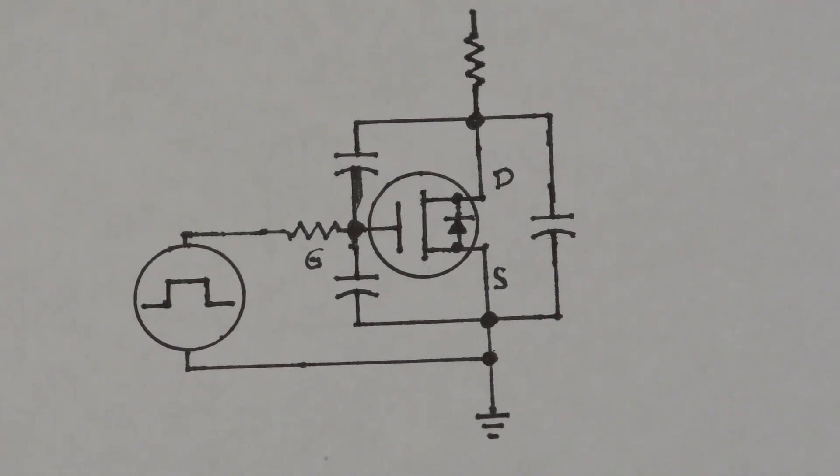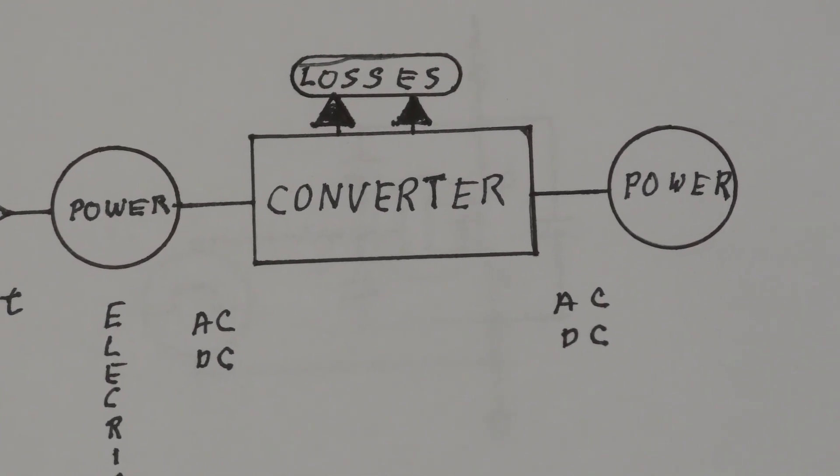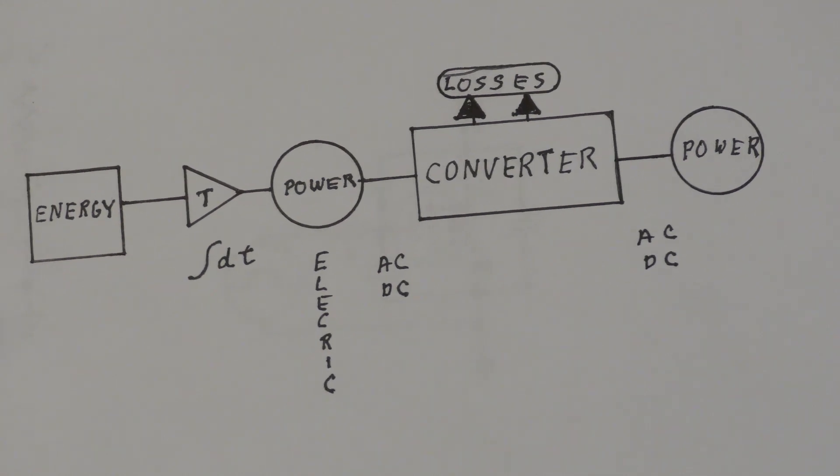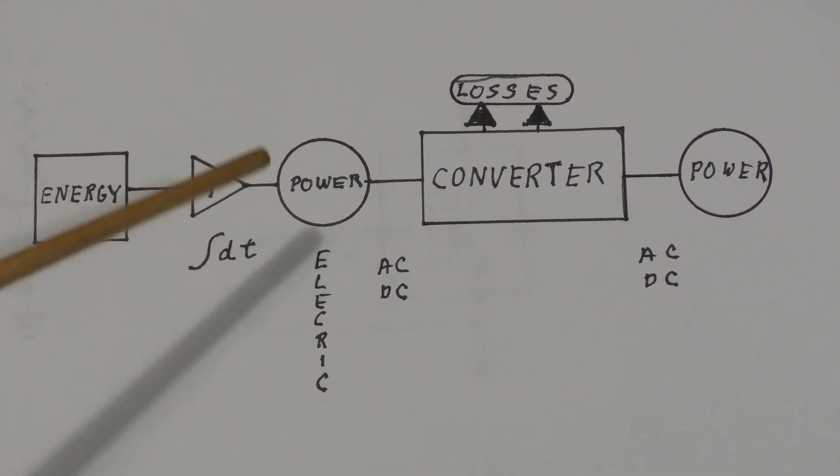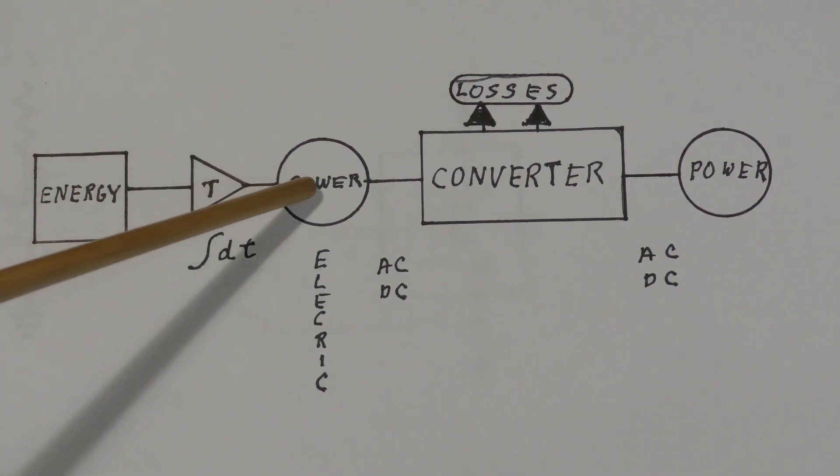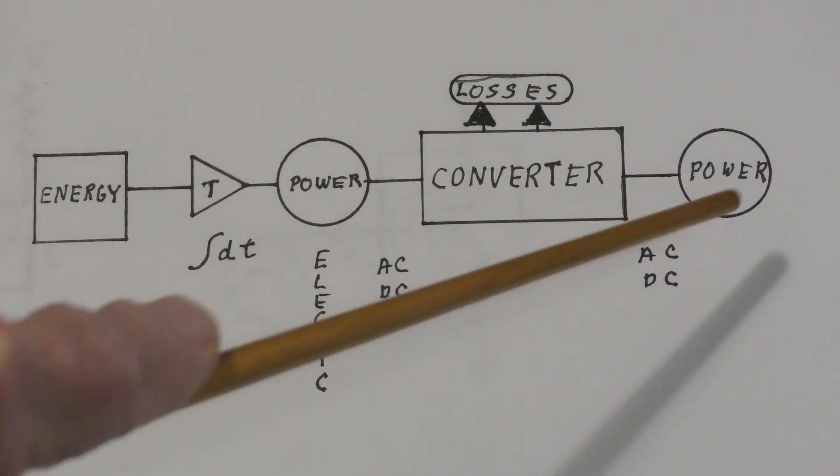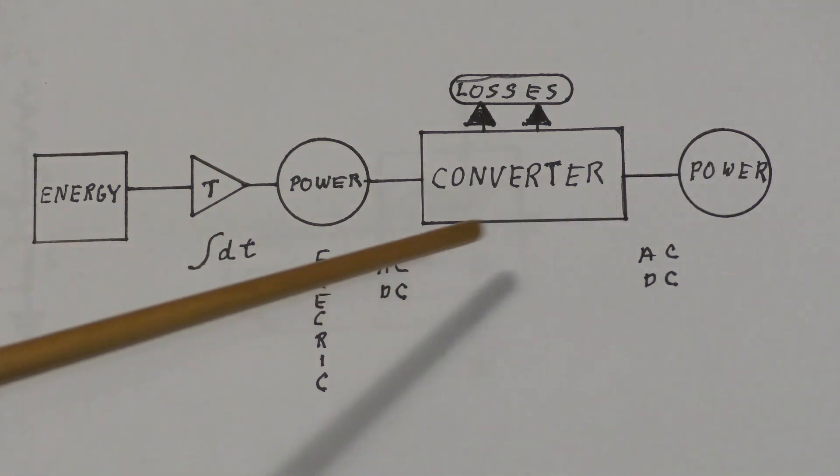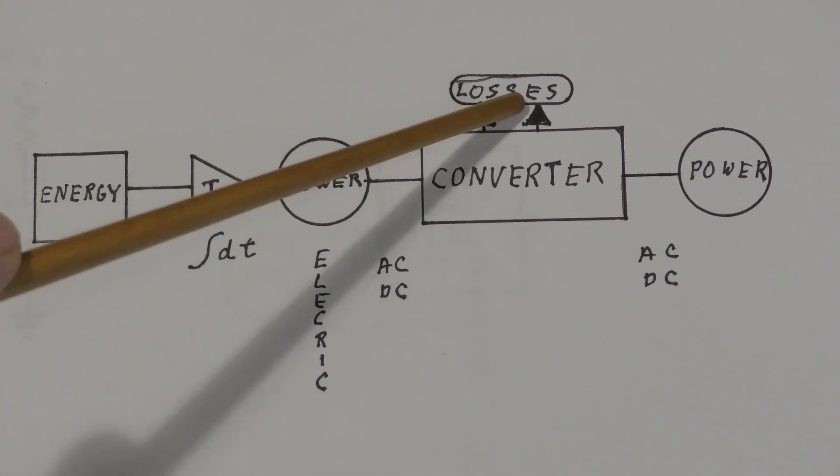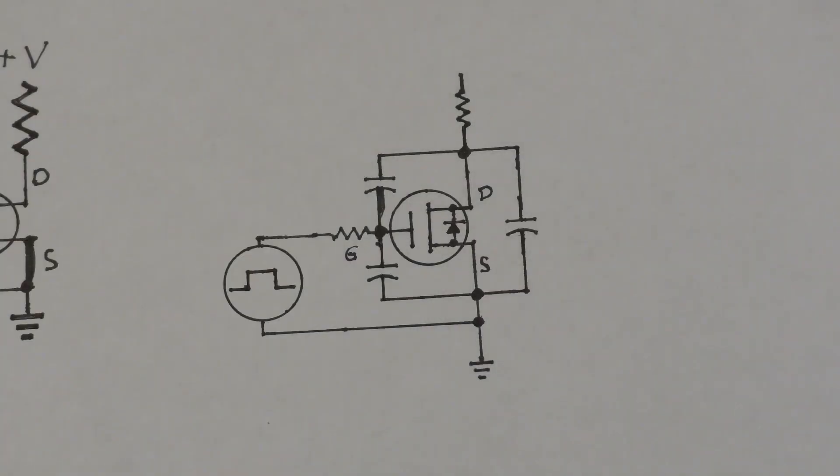So if we go back to the picture that we used earlier of a power converter, we find that when we're trying to convert power in one form to power in another form, either going from AC to DC, for example, or going from one voltage to another voltage, it's the losses that cause the output power to be less than the input power. And one of the sources of power loss in a power converter circuit is the switching losses in the MOSFET itself.